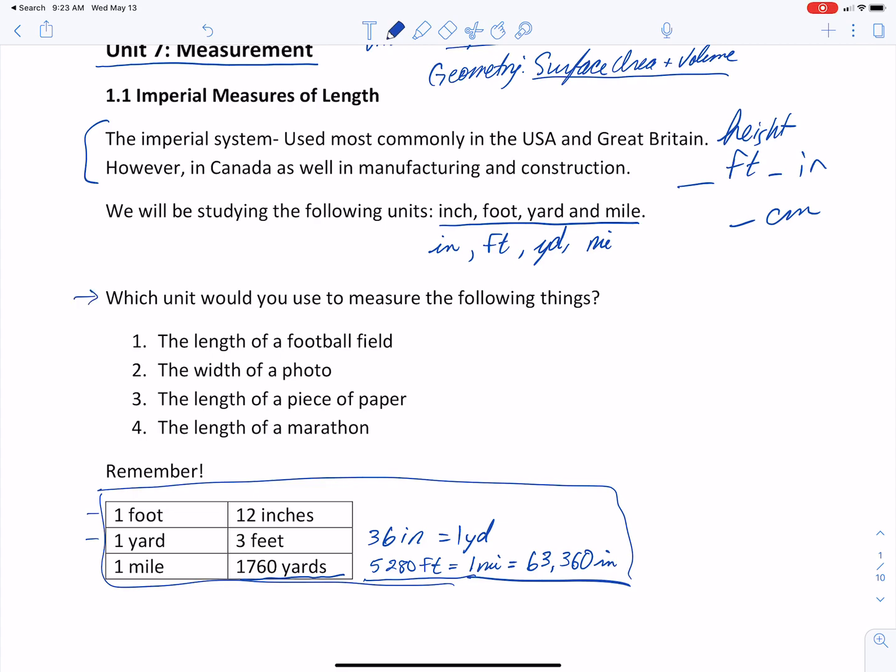So there's some unit conversions that you'll want to write down somewhere to use during this lesson and this homework. Let's turn our attention back to this question. Which unit would you use to measure the following things? So the length of a football field? Probably yards. The width of a photo? Inches. Remember that you might have a photo that's a 5 by 7. What does that mean? 5 inches by 7 inches. The length of a piece of paper? Also inches. In Canada, a standard piece of paper is 8 and a half by 11. The length of a marathon is in miles.